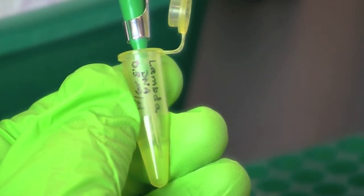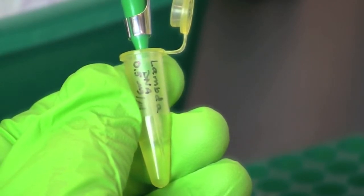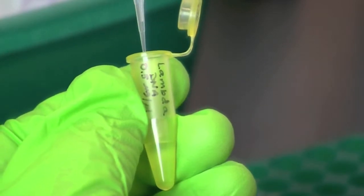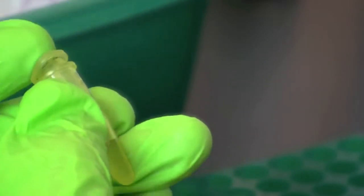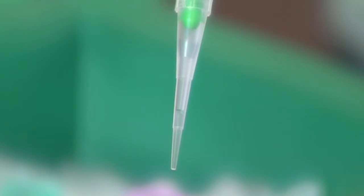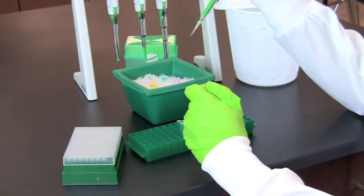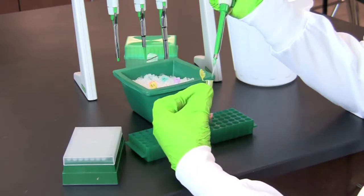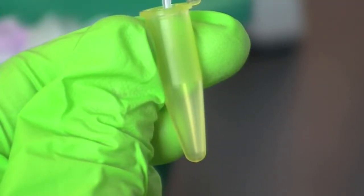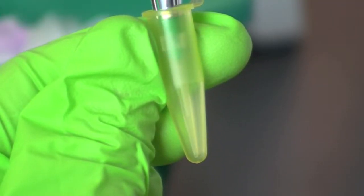When obtaining your sample, work at eye level so you can be certain your pipette tip is in the sample. Look closely at the tip to make certain you have obtained the correct amount of sample. Then transfer the sample to the matching color-coded tube, placing the tip near the bottom of the tube at eye level to make certain all of the sample has been transferred.